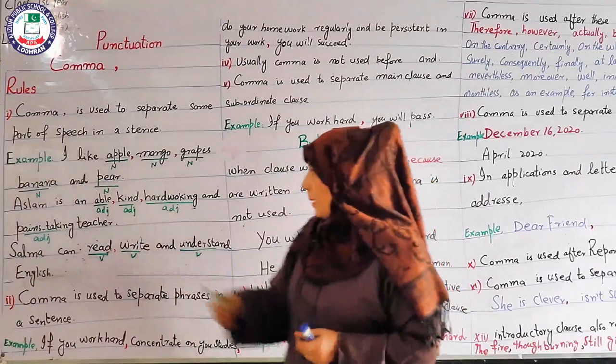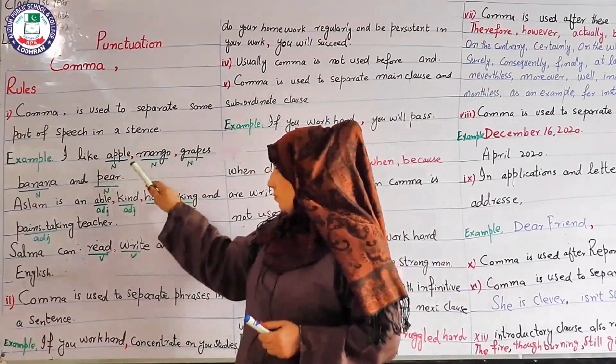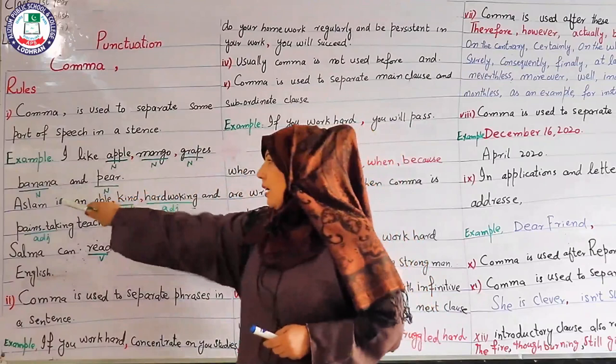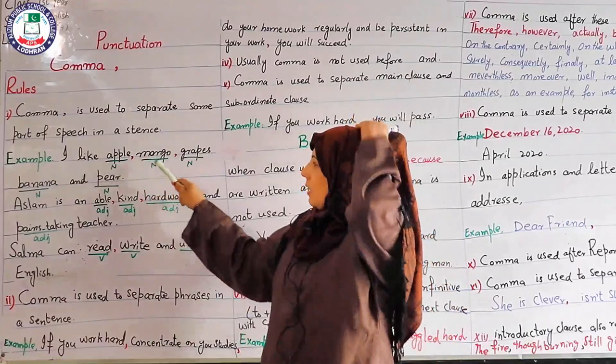For example: 'I like apple, mango, banana, grapes and pear.' We used a comma to separate the same nouns. In the sentence, apple is a noun, mango is a noun, grapes are nouns, banana is a noun, pear is also a noun. So we separated these nouns in the sentence with the help of comma.